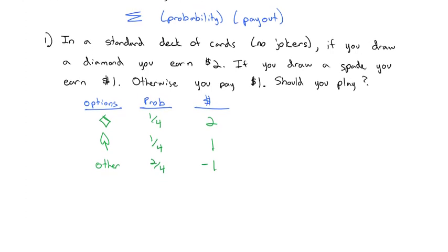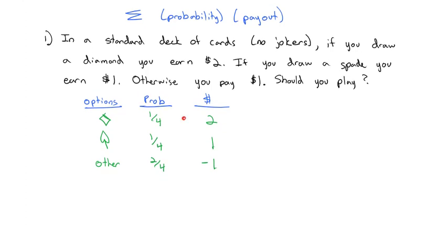And the way we can calculate the expected value is we're going to multiply the probability times the payout. So one-fourth times 2 is 0.5. One-fourth times 1 is 0.25. And two-fourths times negative 1 is negative 0.5. When we add these products together, we'll get the expected value, which is a positive 0.25, or $0.25.